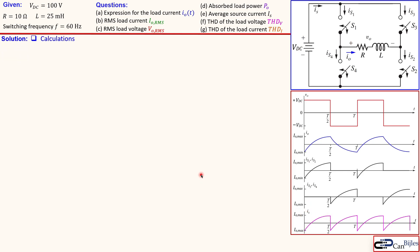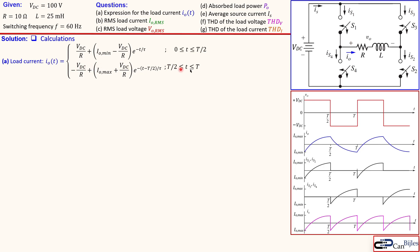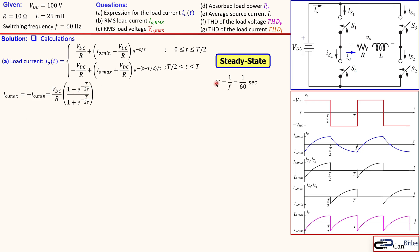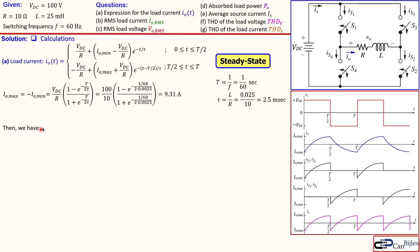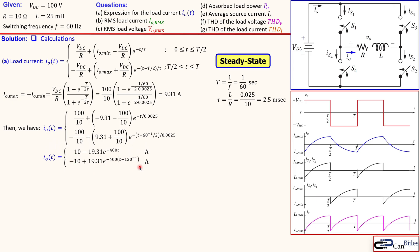Now let's go to the calculations step by step. The load current expression has two parts — one valid for the first half of the period and one for the second half — and this is only for steady state. The expressions for IO minimum and IO maximum are unknown, as are tau and the switching period T. T is 1 over the switching frequency, which is 1/60 seconds. Tau is L over R, giving 2.5 milliseconds. With this information, IO maximum is 9.31 amps, which is the negative of IO minimum. Substituting values into both parts of the equation and simplifying gives the two current expressions for each time range.